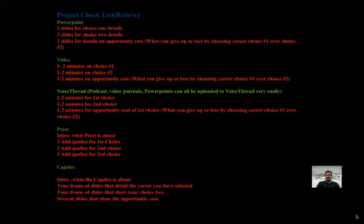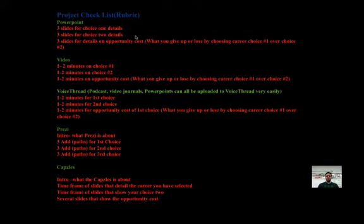Here's the project checklist or the rubric. For a PowerPoint, we are looking for three slides for each of choice one with details, three slides for choice two with details. This is where you put the cost of going to a four-year college or the cost of going to a two-year technical school. Three slides for details on opportunity cost — what you have given up or lost by choosing career one over career choice two.